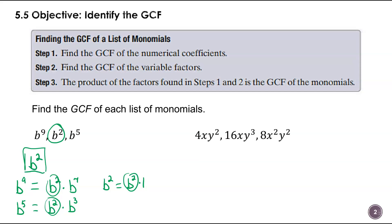Next, we do want to look at the coefficients. We have a 4, a 16, and an 8. The greatest number that's a factor of all three is 4. So 4 is part of my GCF. Then I have X to the first, X to the first, X to the second — so I take X to the first. I have Y squared, Y cubed, and Y squared — so it would be Y squared. So my GCF is 4XY squared.